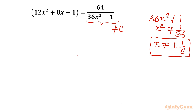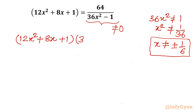This is a quartic equation. Now I can cross-multiply the terms. So I will write: (12x² + 8x + 1)(36x² − 1) = 64.